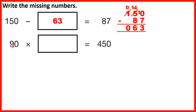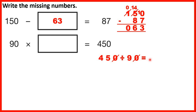Now 90 times something equals 450. Because we have a missing number multiplication, we can divide to find our missing number. So 450 divided by 90 — we can cancel the end zero, and then 45 divided by 9 is 5. So that means 90 times 5 is 450. That makes sense because 9 times 5 is 45, and if we have an end zero in the question we need an end zero in the answer.